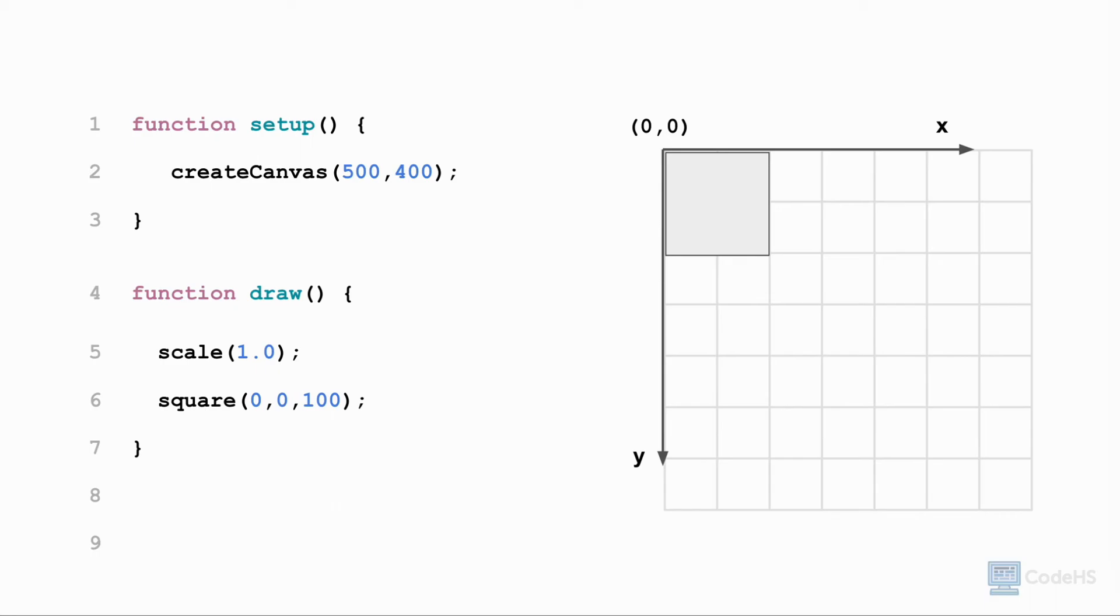Nothing appears changed here because scaling at 100% is the same as the original. To double the size of the square, we call the scale function and pass 2.0 as an argument. This scales the square by 200%. To shrink the shape by half or scale by 50%, we write scale 0.5 before the shape.